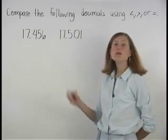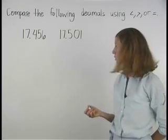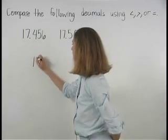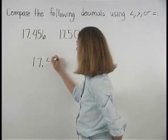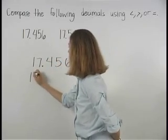To compare decimals, begin by lining up the decimal points of each number. So here, we line up the decimal points of 17.456 and 17.501.